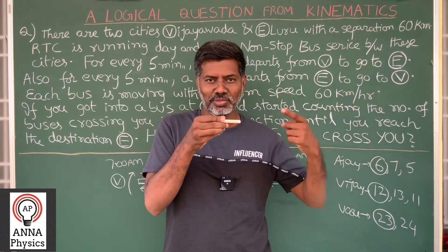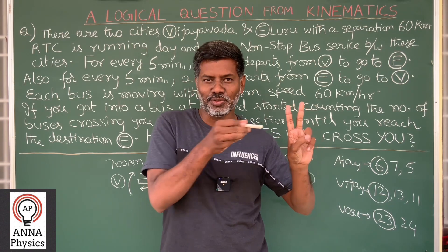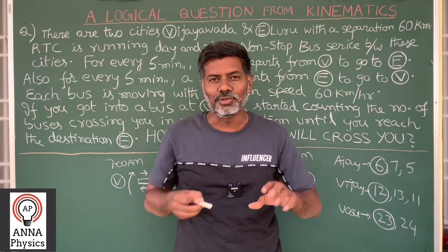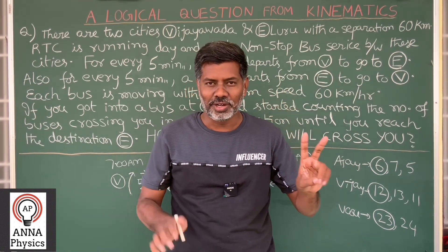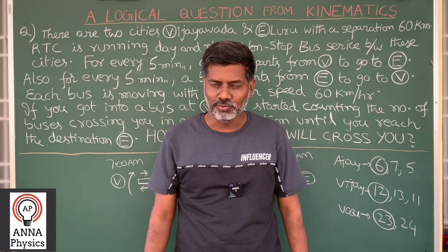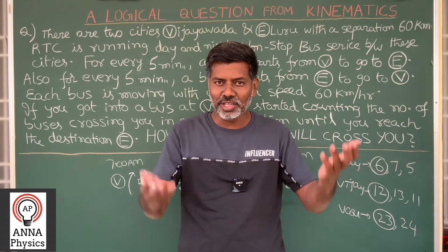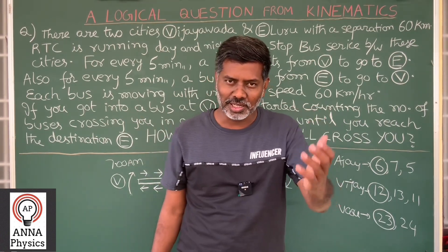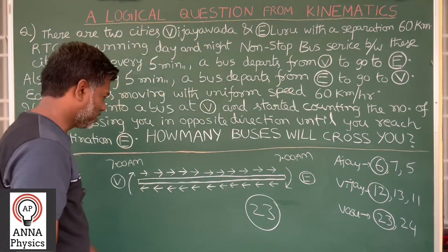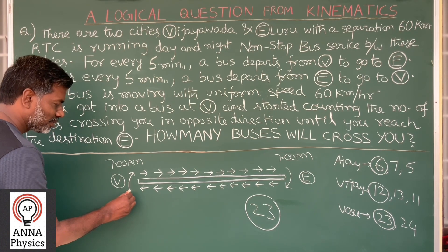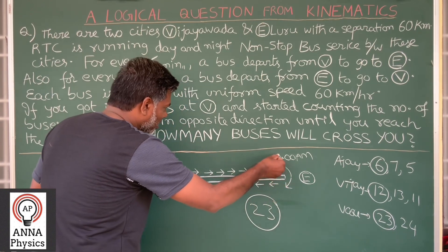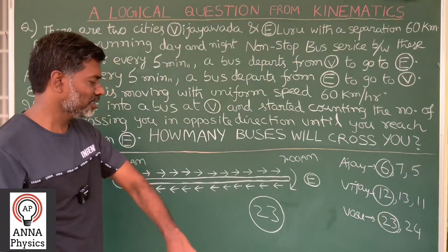So, for every 2 and a half minutes, 1 bus will cross you. For 5 minutes, 2 buses will cross you. For 10 minutes, 4 buses will cross you. For half an hour, 12 buses will cross you. For the total journey time of 1 hour, 24 buses will cross you. But the correct answer is 23 only — you have to exclude your own bus, because after 1 hour, your bus will be at the destination city Eluru bus terminal. You should not count yourself crossing you. So, the final answer is 23.